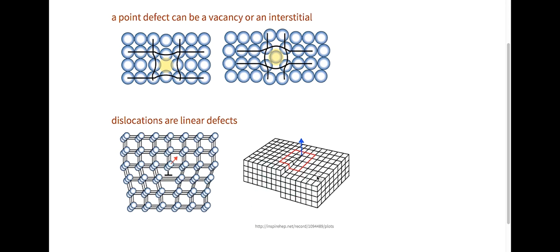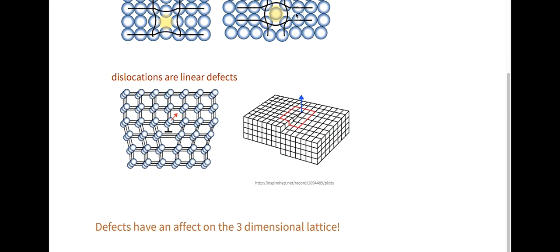Another type of dislocation is a screw dislocation. The blue arrow here shows the line direction of this defect. Here, atoms on one side are higher than the other, here it's lower, and you see this almost spiral shape that forms kind of like a screw. From these pictures, you can really see how defects distort the 3D lattice.